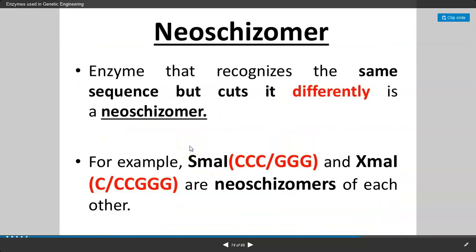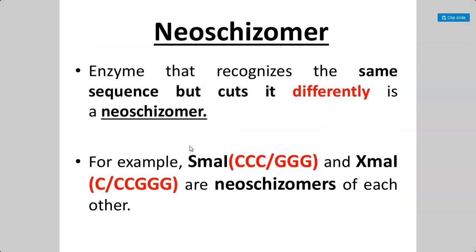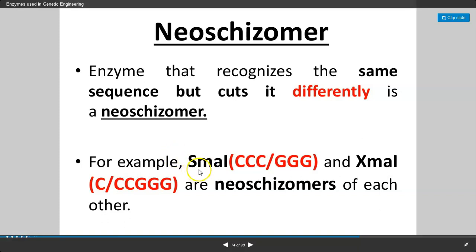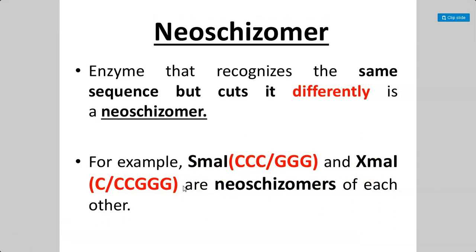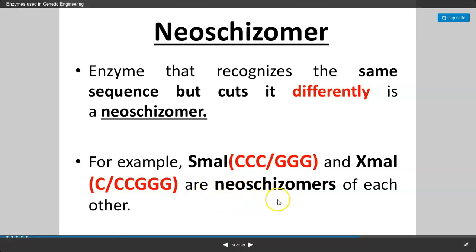Neoschizomers are enzymes that recognize the same sequence but cut at different locations. For example, SMAL has the recognition sequence CCCGGG and makes a cut at the center between cytosine and guanine. Another enzyme, XMAL, has the same recognition sequence CCCGGG, but makes the cut after the first nucleotide — between cytosine and cytosine. So SMAL and XMAL have the same recognition sequence but cut at different positions. Such enzymes are called neoschizomers.